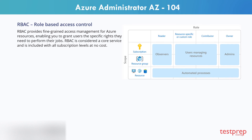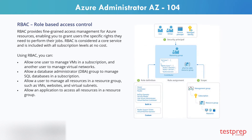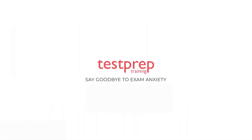RBAC provides fine-grained access management for Azure resources, enabling you to grant users the specific rights they need to perform their jobs. RBAC is considered a core service and is included with all subscription levels at no cost. Using RBAC, you can: allow one user to manage VMs in a subscription and another user to manage virtual networks; allow a database administrator group to manage SQL databases in a subscription; allow a user to manage all resources in a resource group, such as VMs, websites, and virtual subnets; and allow an application to access all resources in a resource group.